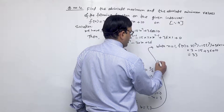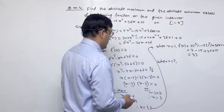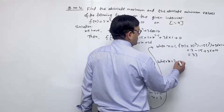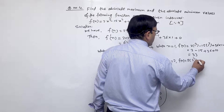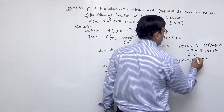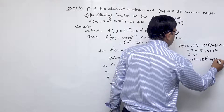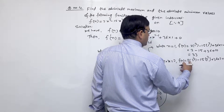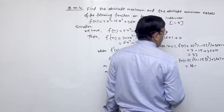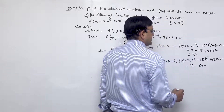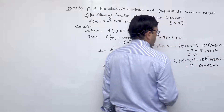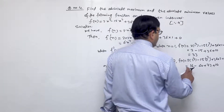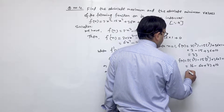When x = 2, f(2) = 2(2)³ - 15(2)² + 36(2) + 10 = 16 - 60 + 72 + 10 = 38.